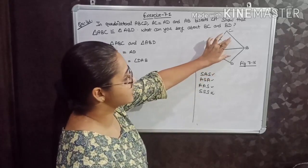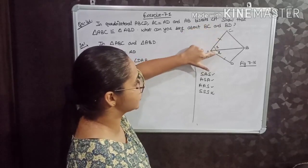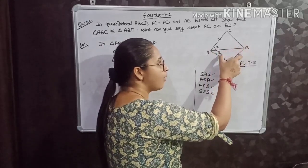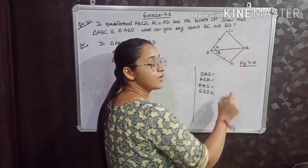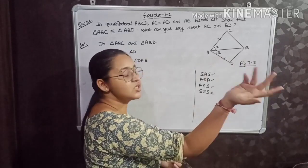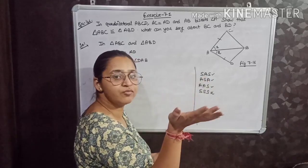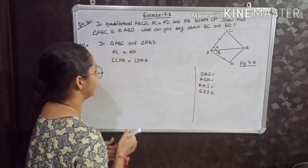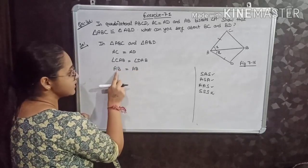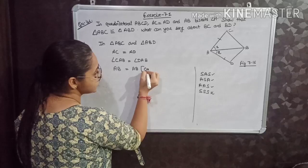See these two triangles that I have to show are congruent. This side is given equal to this, and this angle is equal to this. Very carefully, AB is the side that is common to both triangle ABC and triangle ABD. So AB is equal to AB — the reason is common side.